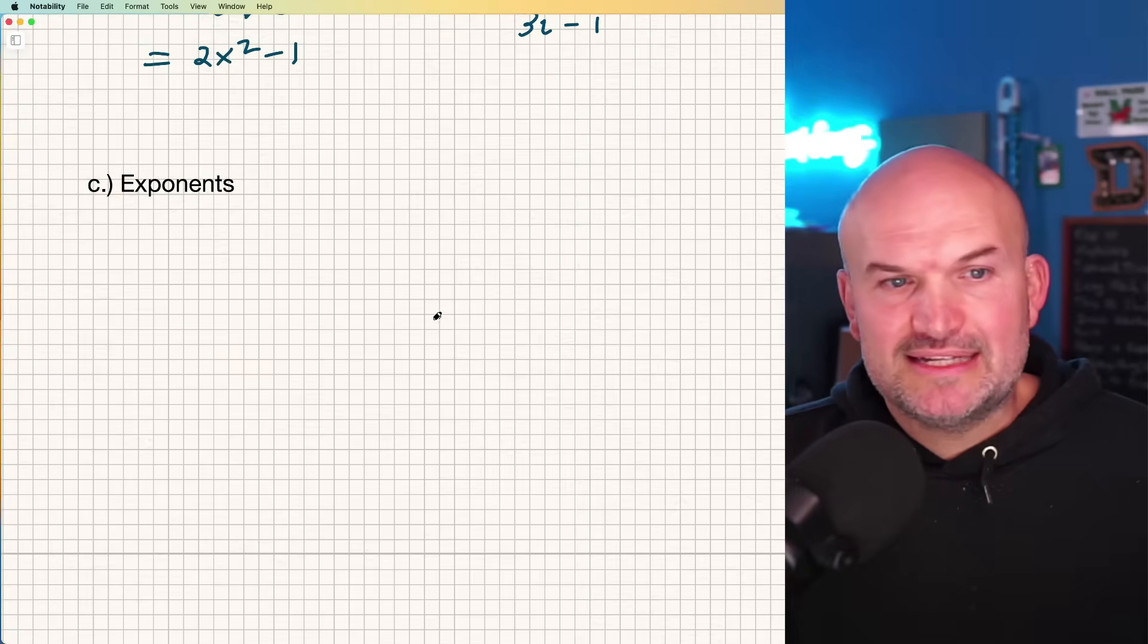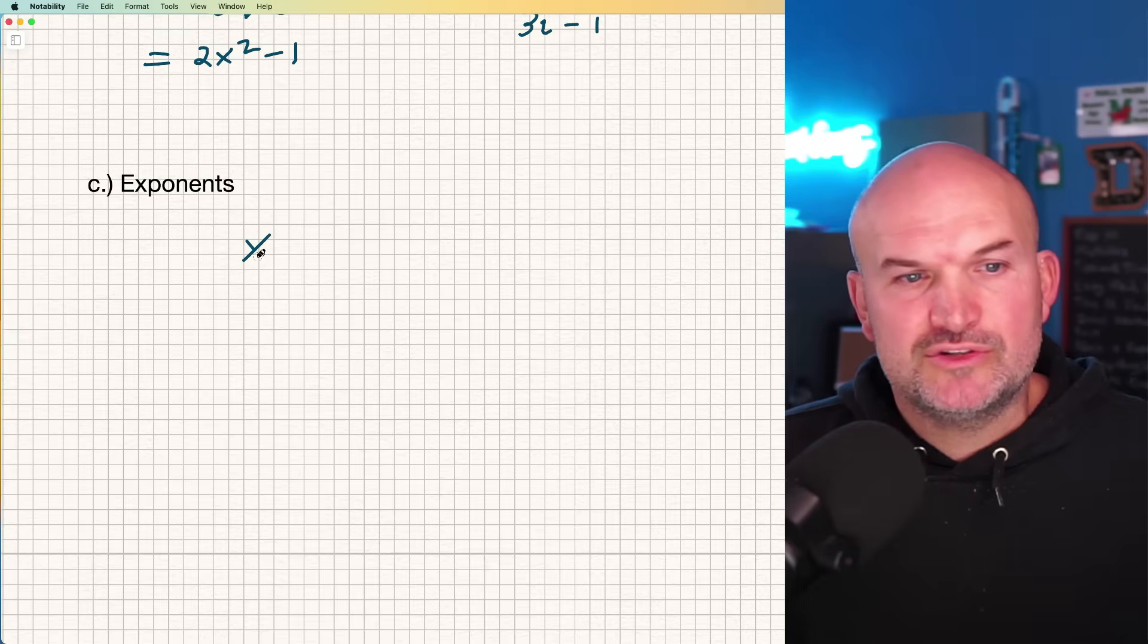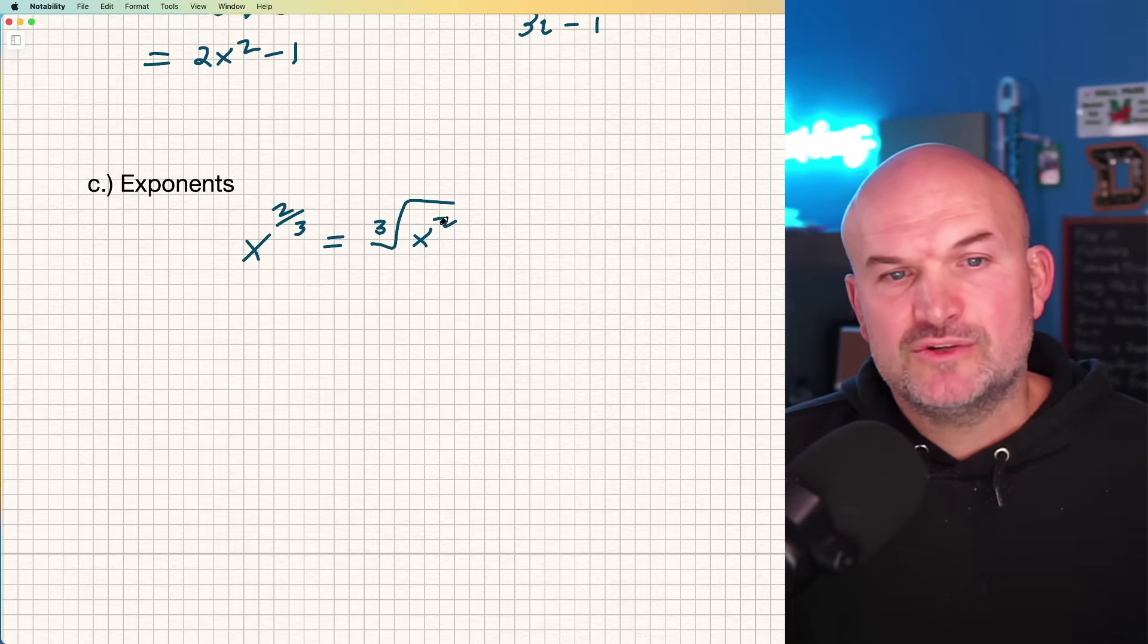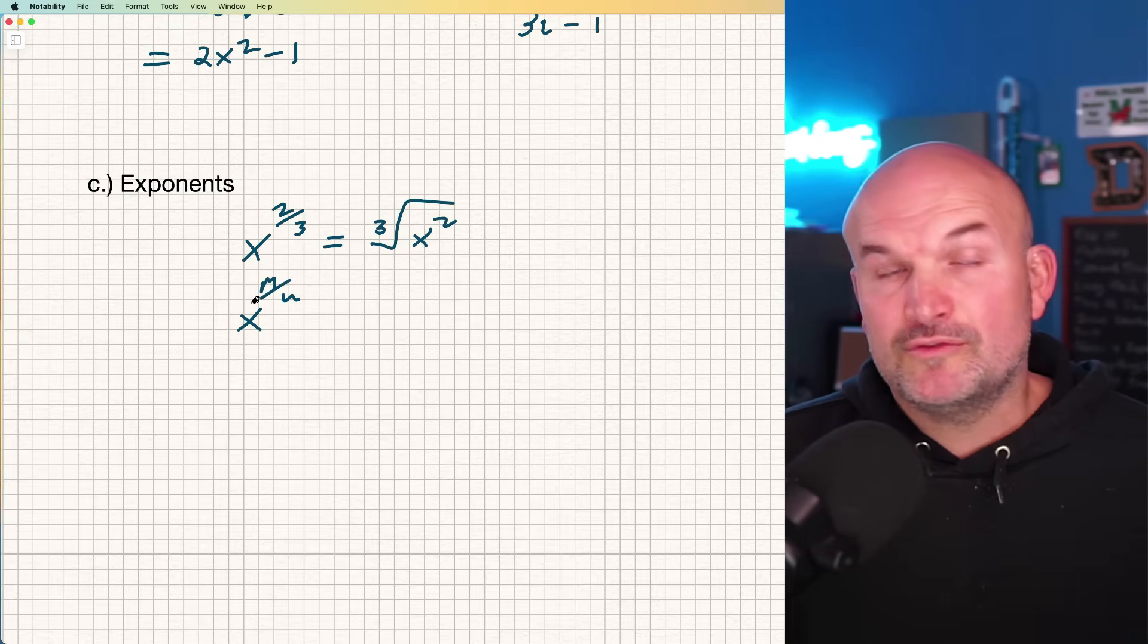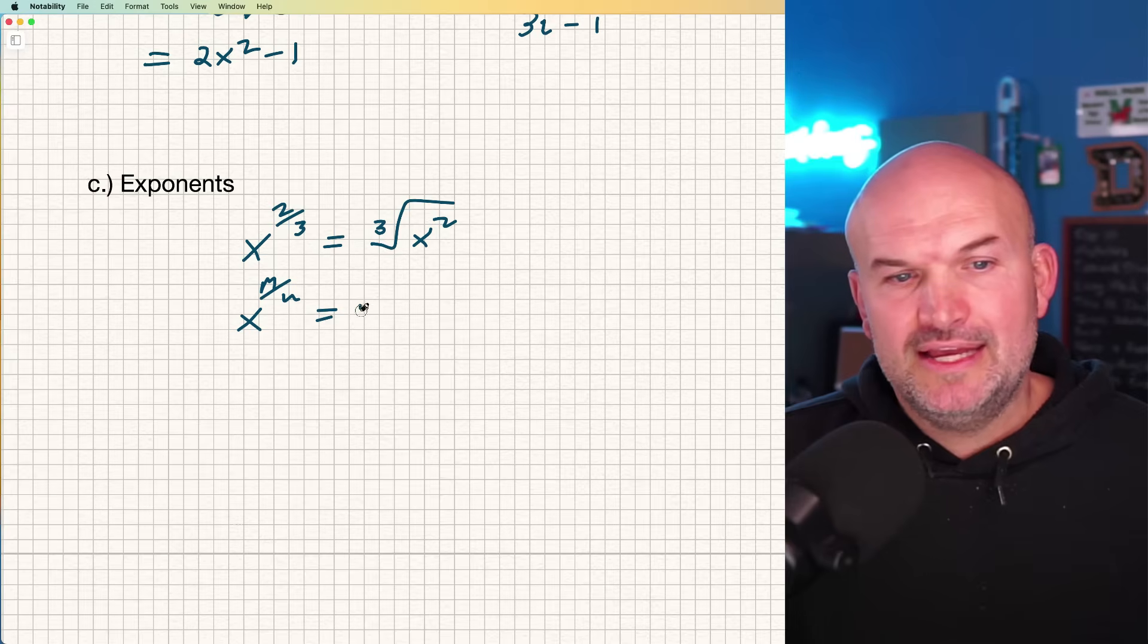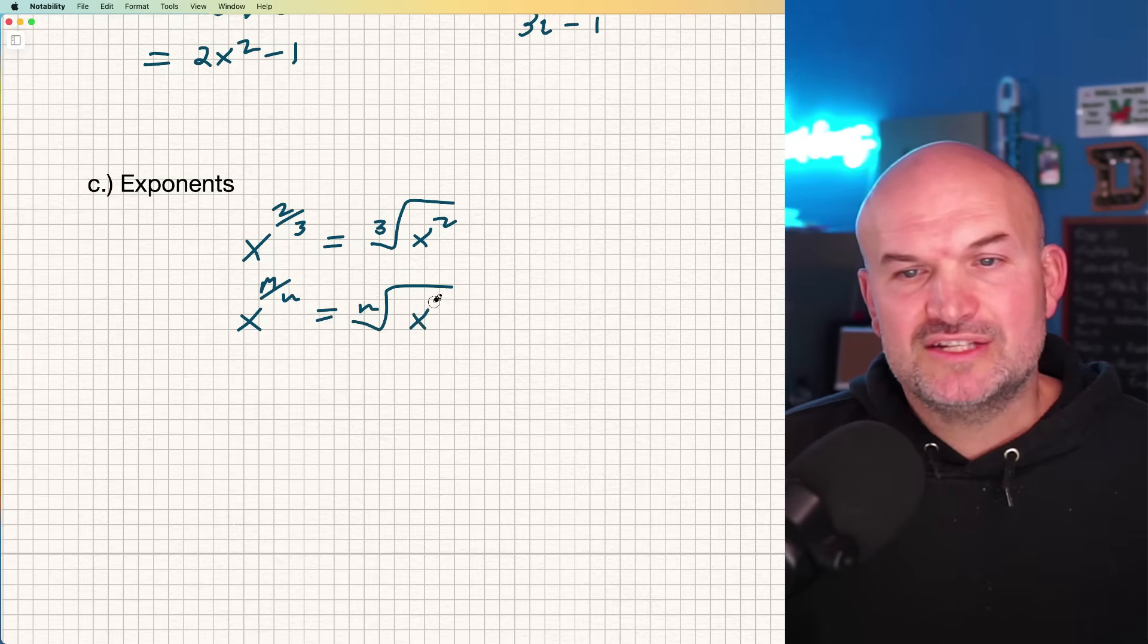The next one is rational exponents. Just remember if I have x to the 2/3, that equals the cube root of x². That comes from the common rules of exponents: x to the m/n equals the nth root of x to the mth power.